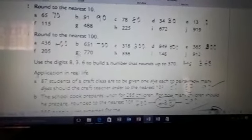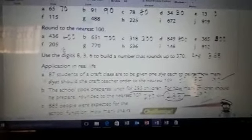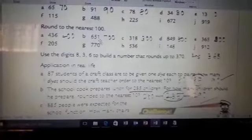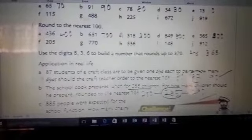Now, rounded to the nearest hundred. 436 will be rounded to 400, not 500. 651, above 50 means it will be rounded to 700. Like this, you have to consider.